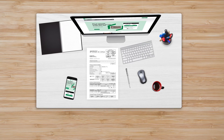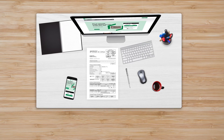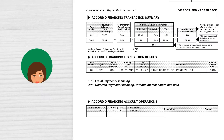If you have Accord D Financing, the second page of your statement shows information about your financing. At the bottom of the Accord D page, you'll see your Accord D Financing transaction details and any transactions made during the month.